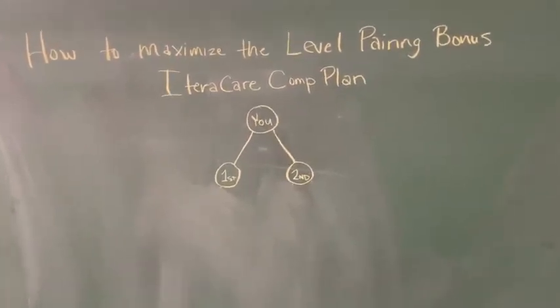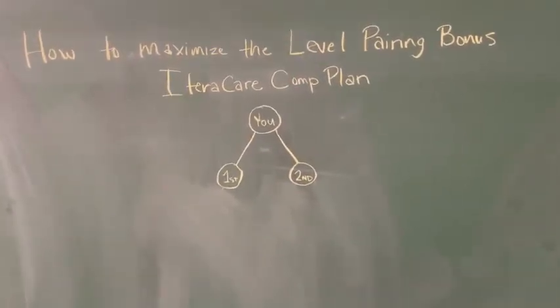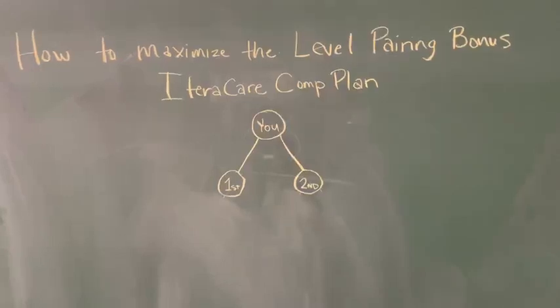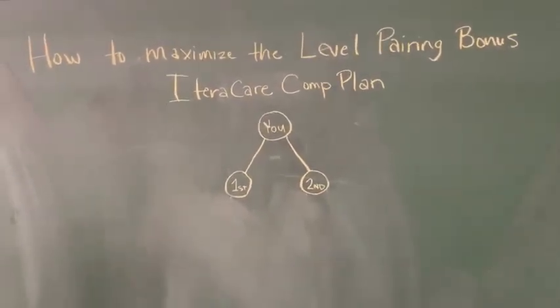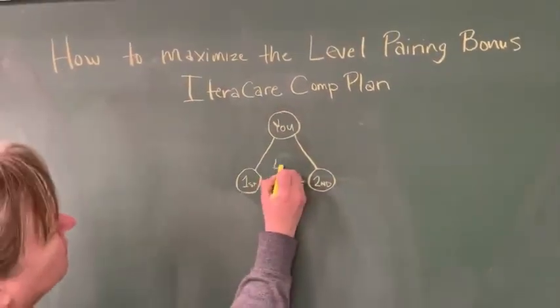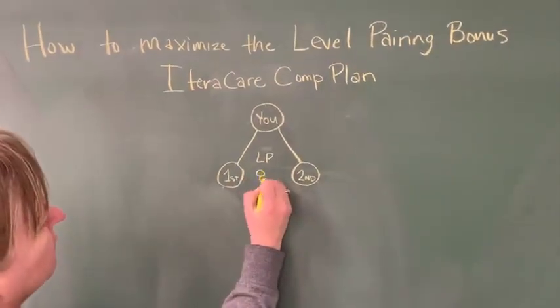So as you can see here, you are at the top. Your first person that you bring in has to go to the left. Then your second person that you bring in should go to the right. Now, that just earned you a level pairing bonus of $80.